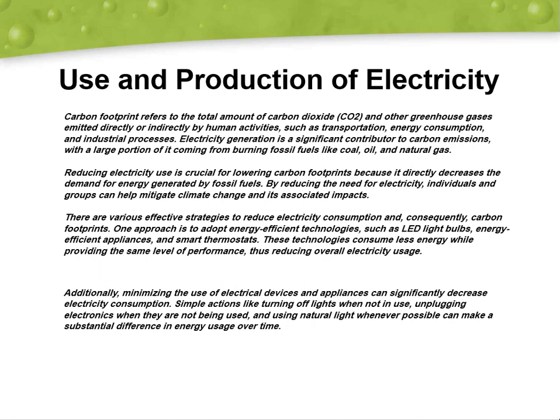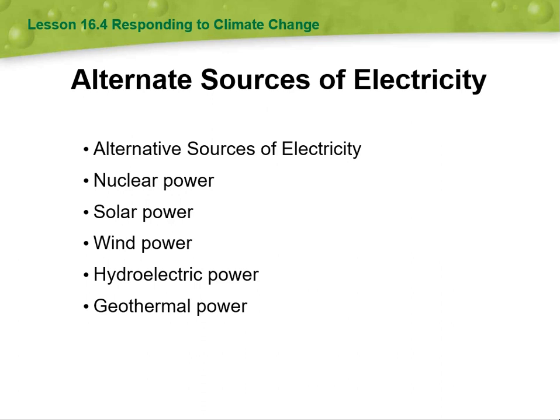Additionally, minimizing the use of electrical devices and appliances can significantly decrease electricity consumption. Simple actions like turning off lights when not in use, unplugging electronic devices when they are not being used, and using natural light whenever possible can make a sustainable difference in energy usage over time.